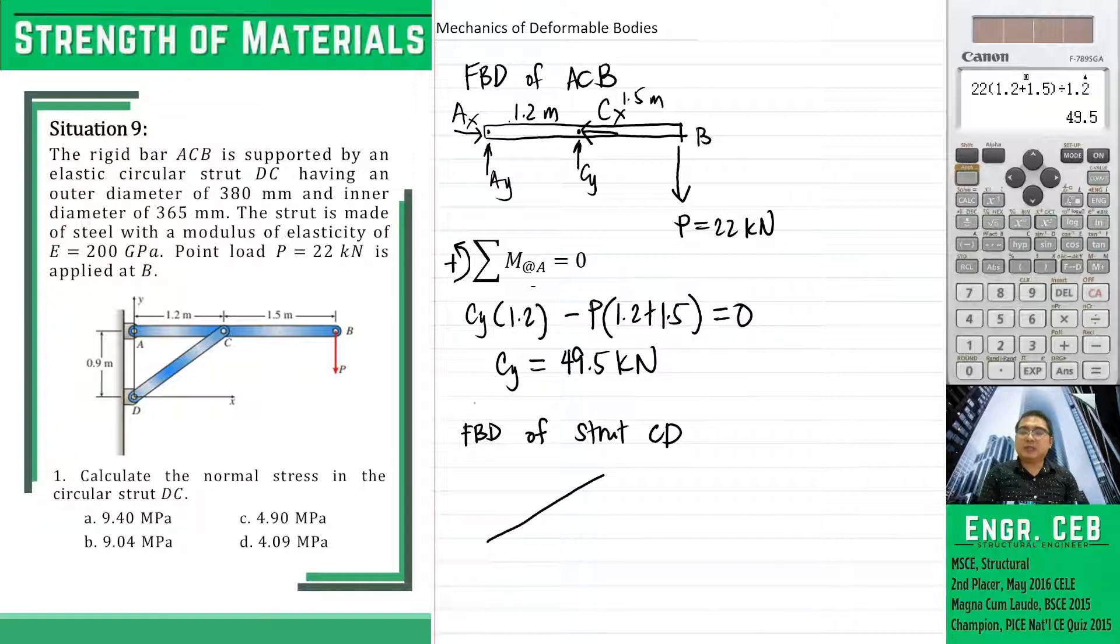Previously, we have solved the value of CY and it is positive meaning we have the correct assumption of CY. So now that we are analyzing strut CD instead of upward force, we should use the opposite direction of that force. If CY is upward in the FBD of ACB, CY will now be downward in the FBD of strut CD. So this is 49.5 kN.